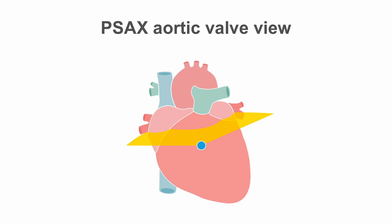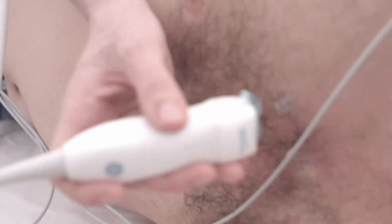This shows where the parasternal short axis view at the level of the aortic valve cuts through the heart. This is our probe and you can see the ultrasound moving into the heart. The first structure it encounters is the right ventricular outflow tract. Behind it will be the aortic valve and the left atrium.